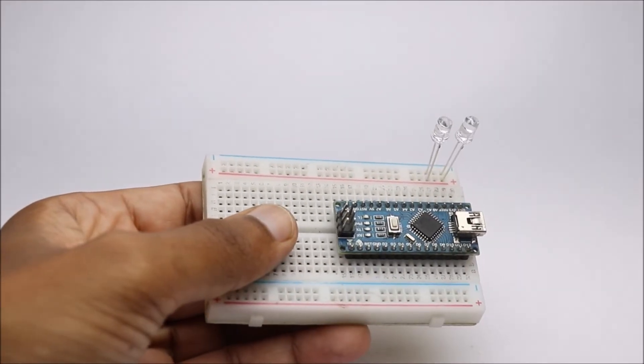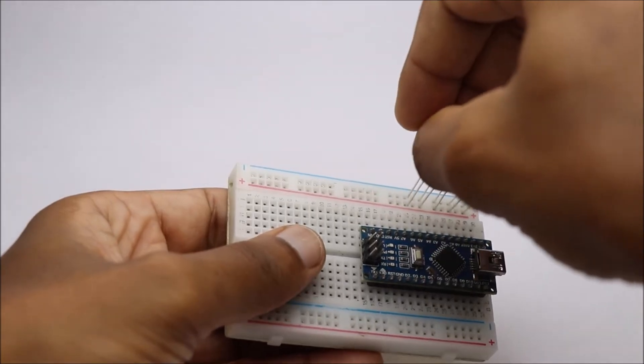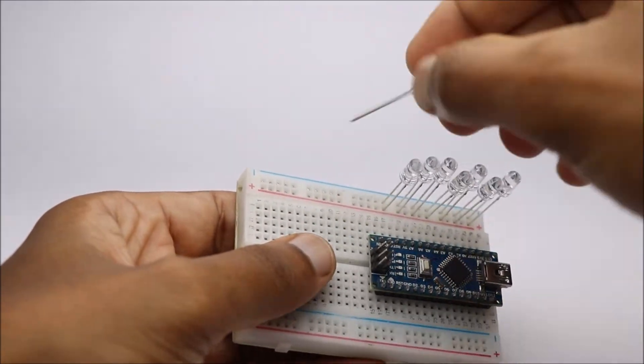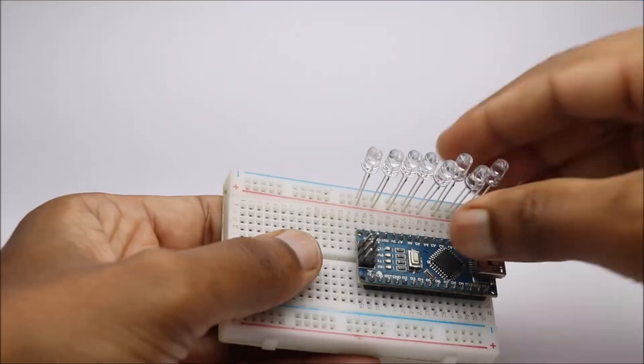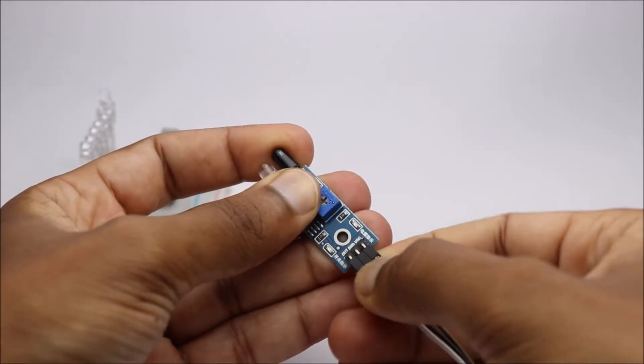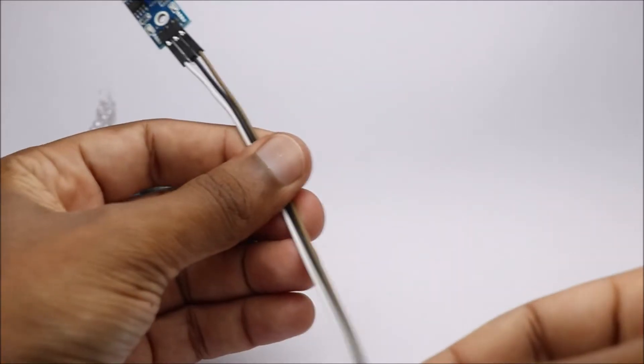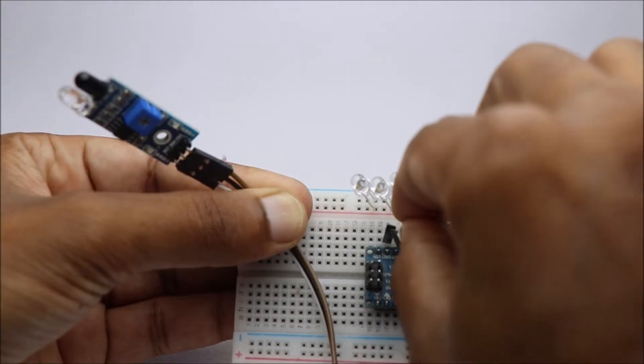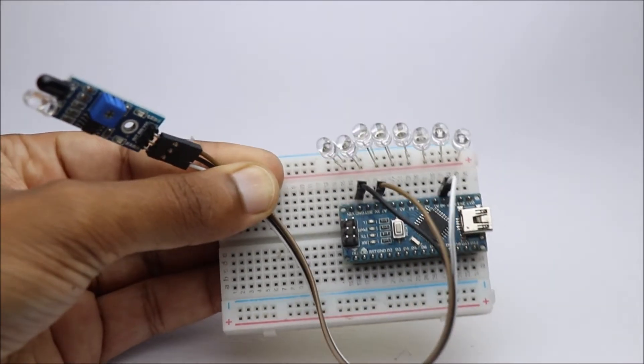I will connect LEDs to D2 and the other terminal goes to ground. Signal pin of IR sensor will go with A0 pin of Arduino Nano.